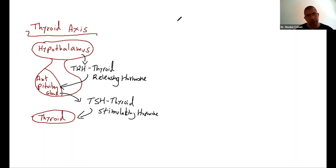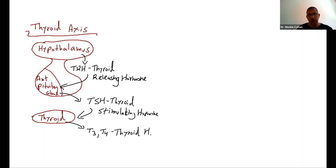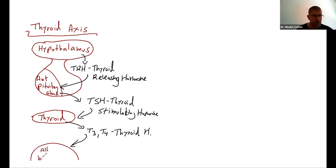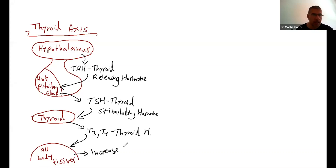The thyroid gland is producing, in response, two hormones: T3 and T4, which are the thyroid hormones. Thyroid hormones are affecting all body tissues. And the result is the hormonal effect, which we call an increase in calories in the basal metabolic response.